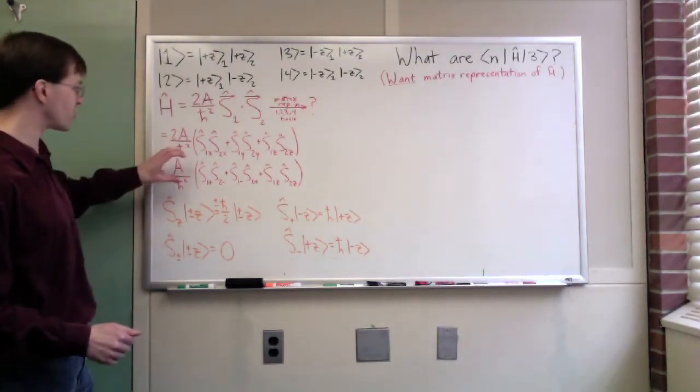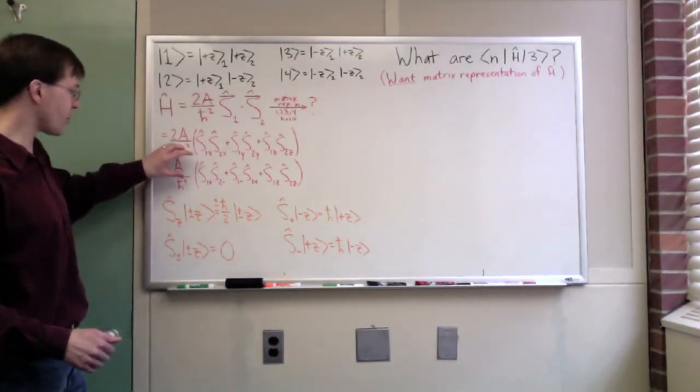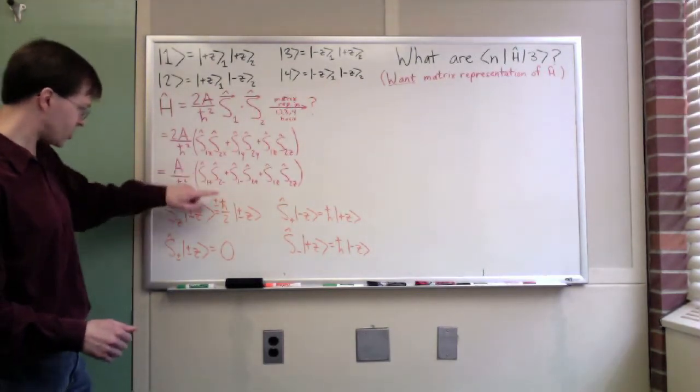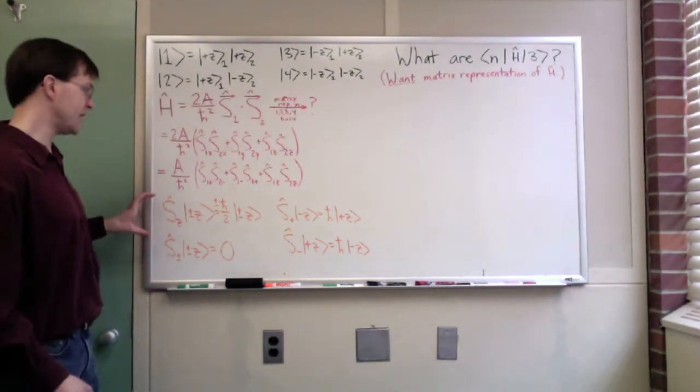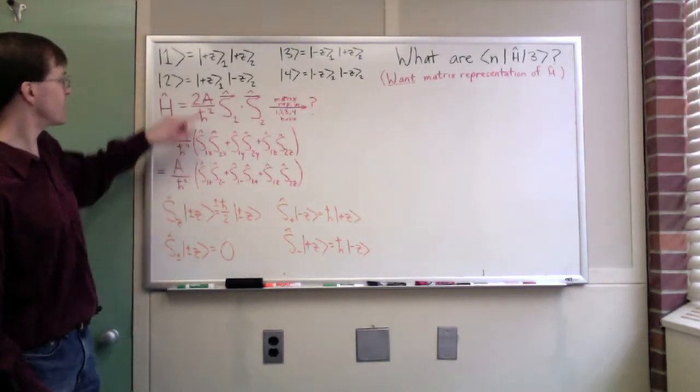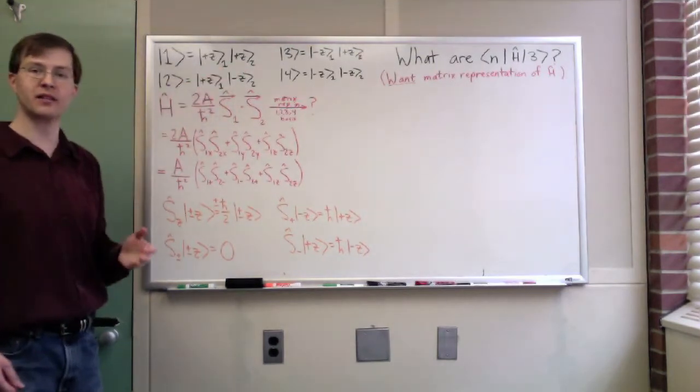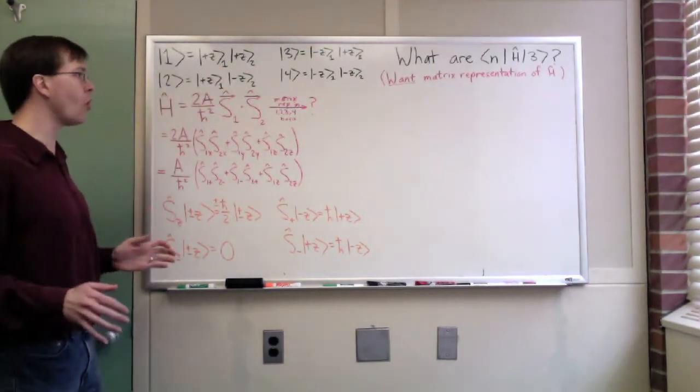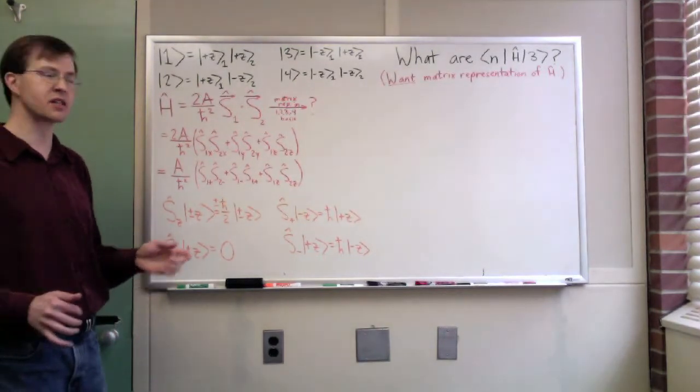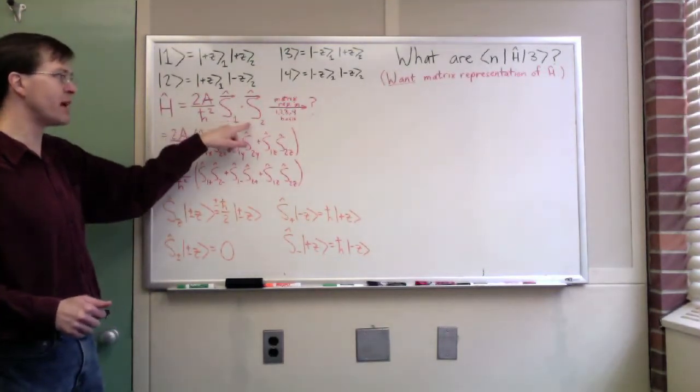Now remember, in application, we're going to have separately S1 plus and S2 plus. Those are independent operators that happen to follow the same rules, but they only apply to either state 1 or state 2, respectively. Our goal is that we want the matrix representation of the Hamiltonian. We want this in matrix form. And that means we're going to have to evaluate a whole bunch of brackets.